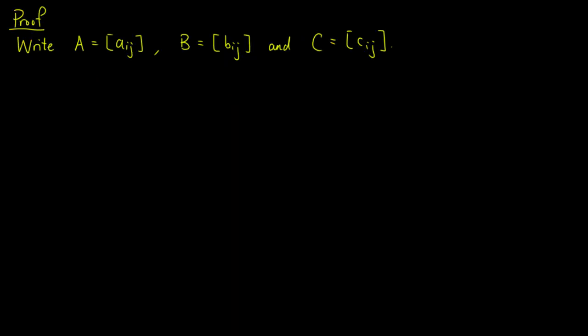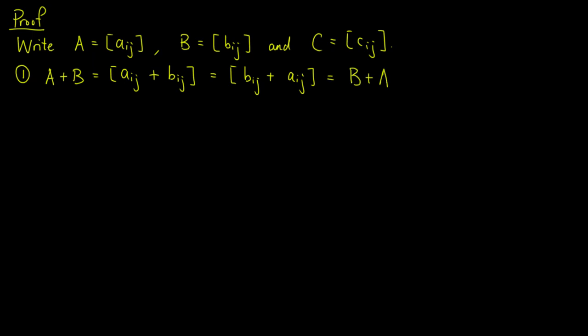First, rewrite A, B, C as matrices with entries Aij, Bij, and Cij respectively. For the first property, A plus B equals the matrix with entries Aij plus Bij. Since we can swap the real numbers in addition, this is equal to the matrix with entries Bij plus Aij. So this is equal to the matrix B plus A.